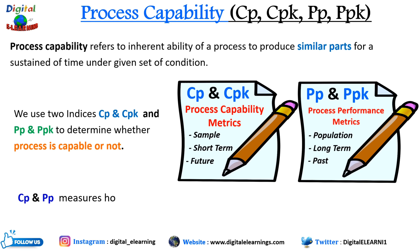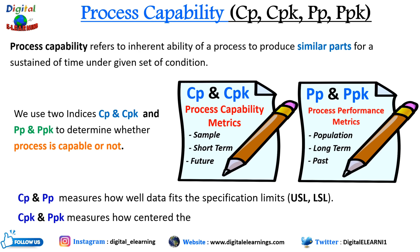Cp and pp measure how well the data fits within the specification limits — that is, the upper specification limit and the lower specification limit. Cpk and ppk measure how centered the data is between the specification limits. Let us understand this concept of cp, cpk, pp, and ppk using some animations.